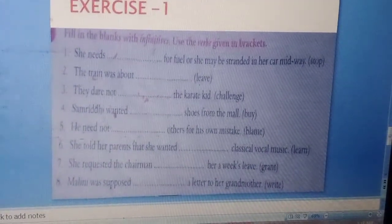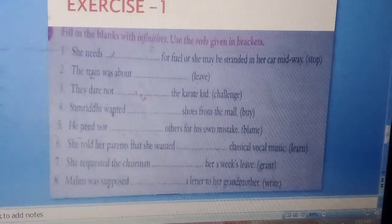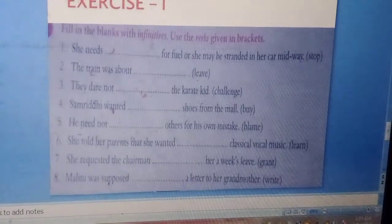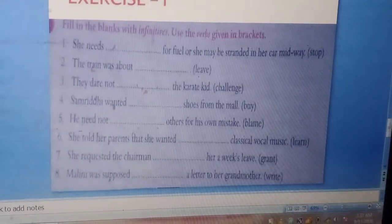Fourth one. Smriti wanted dash shoes from the mall. In bracket the word is buy. Fifth one. He need not dash others for his own mistake. In bracket the word is blame.